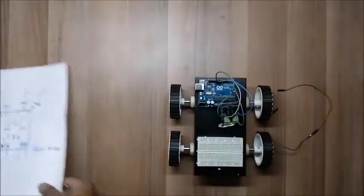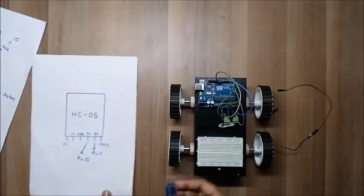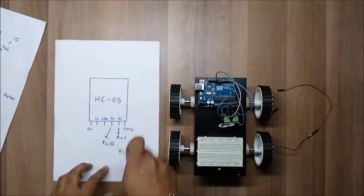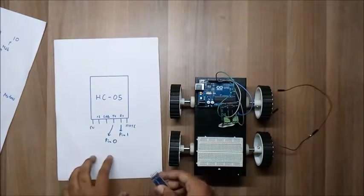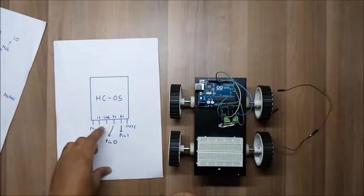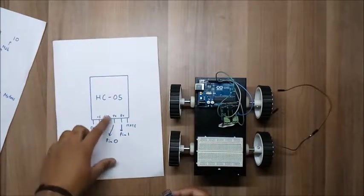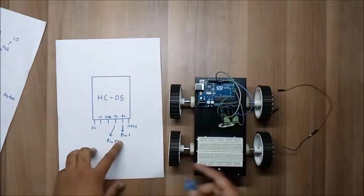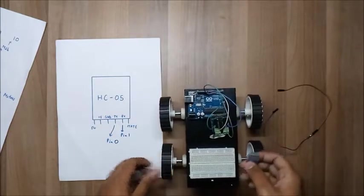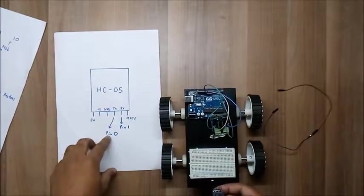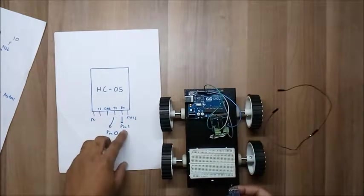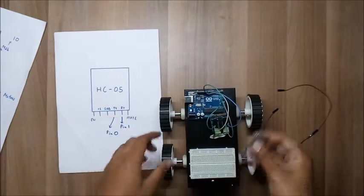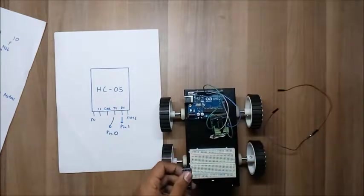Next step: take the HC-05 Bluetooth module and do the connections according to this block diagram. We are not going to use the EN and STATE pins. TX stands for transmitter and RX stands for receiver. Connect TX to pin 0 and RX to pin 1 of Arduino. Pin 0 is the built-in receiver and pin 1 is the built-in transmitter. Never connect TX with TX or RX with RX.